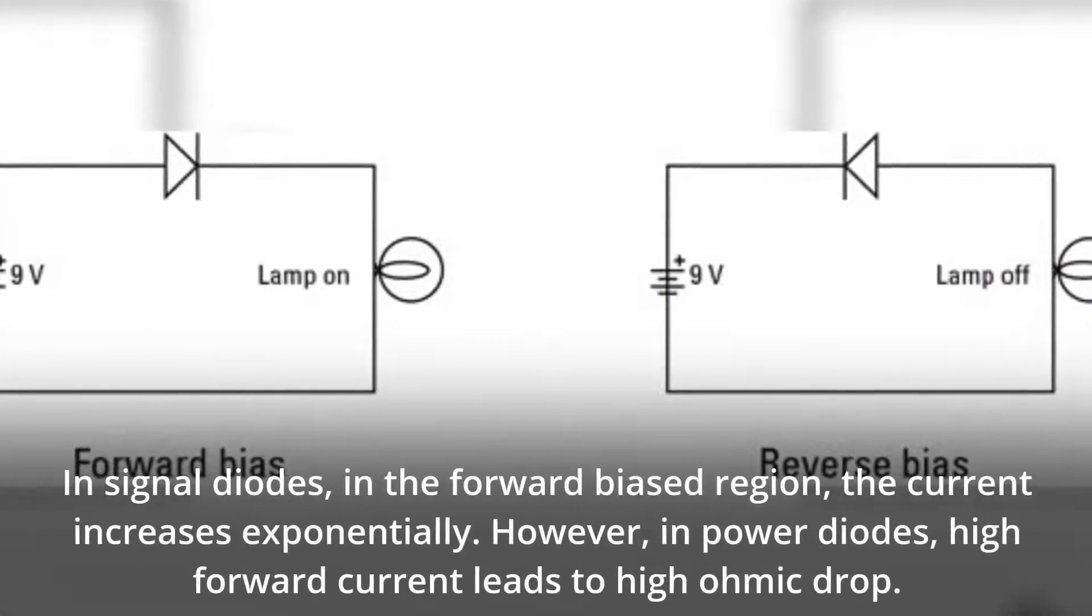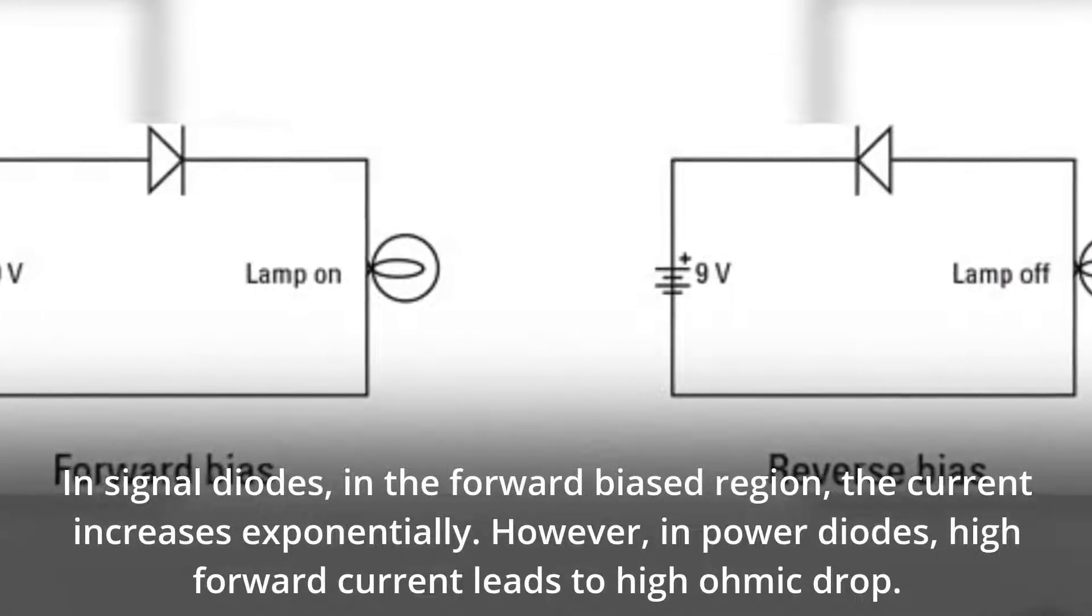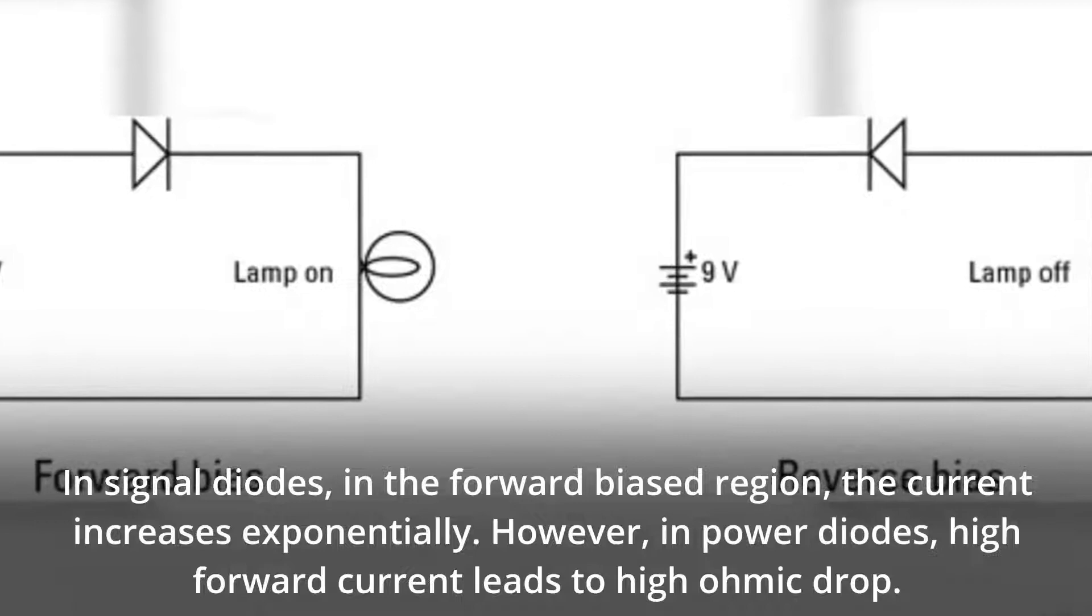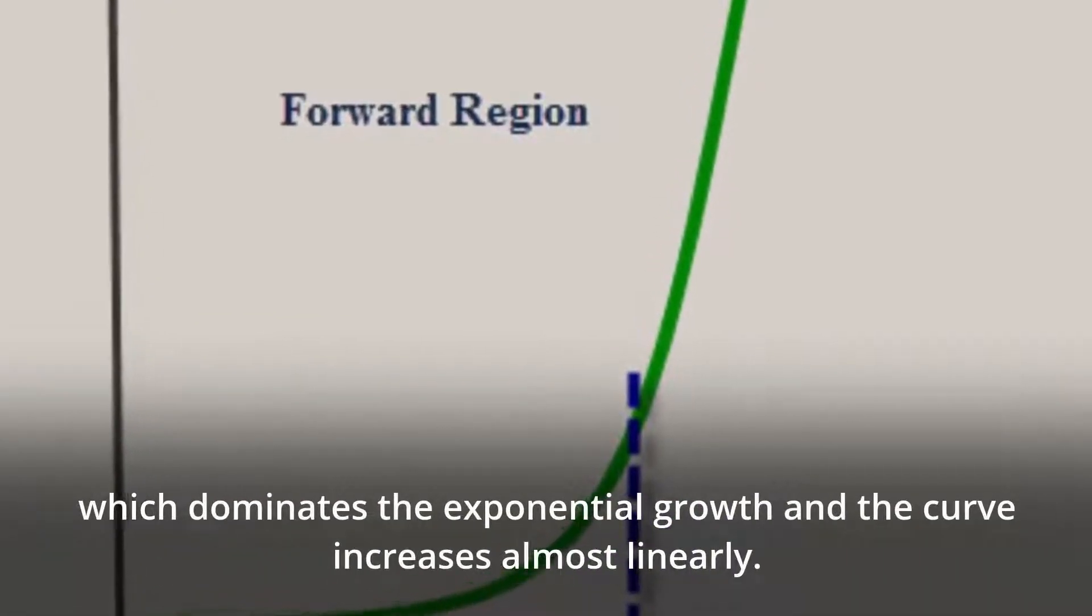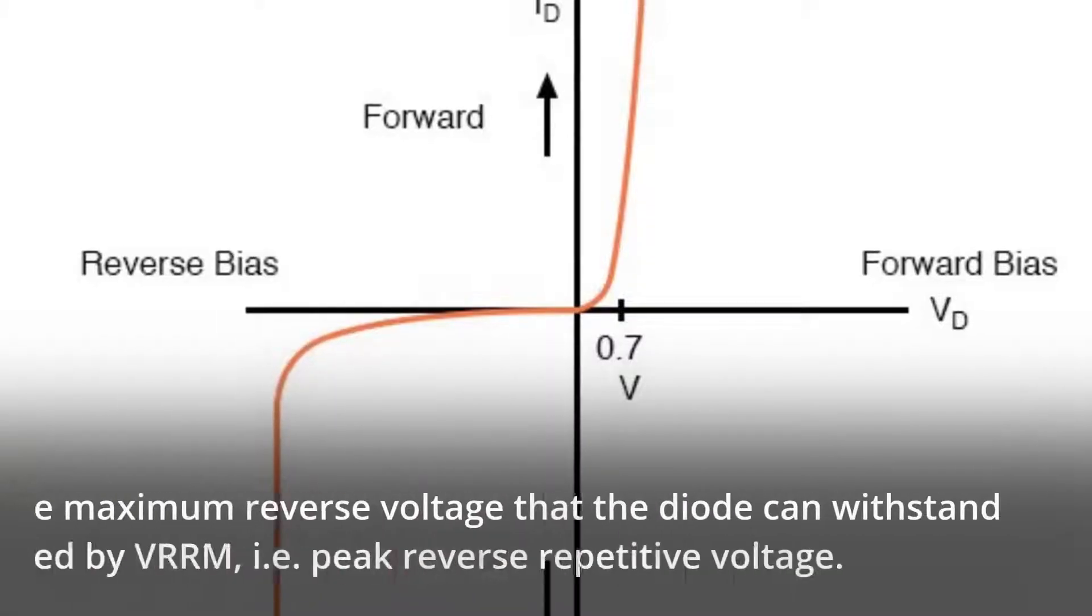In signal diodes, in the forward biased region, the current increases exponentially. However, in power diodes, high forward current leads to ohmic drop, which dominates the exponential growth and the curve increases almost linearly.